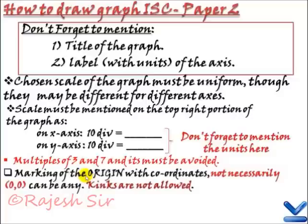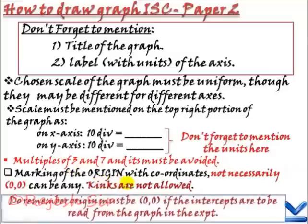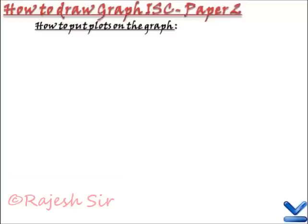Marking of the origin. Now, the origin should not just be mentioned as O. It should be mentioned with its proper coordinates. It may not necessarily be 0,0. Kings are not allowed in ISC physics paper too. Please take care. You should not draw any kings. If you are supposed to read the intercepts from the graph, then the origin of the graph necessarily has to be 0,0. That is a very important point that one should take care.